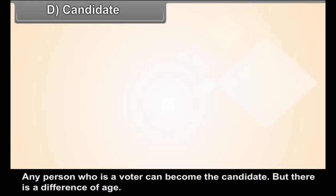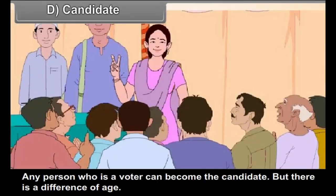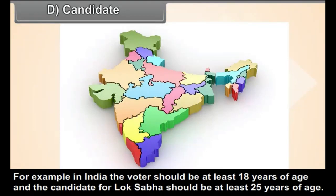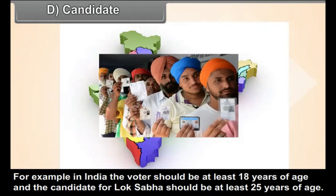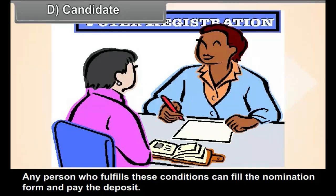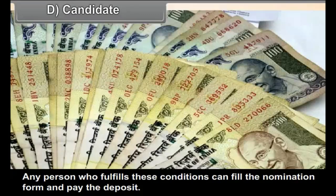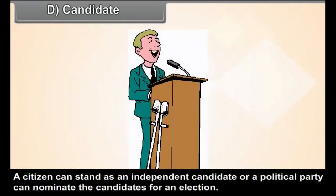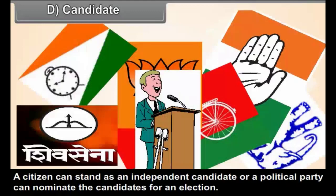Candidate: Any person who is a voter can become a candidate, but there is a difference of age. In India, the voter should be at least 18 years of age and the candidate for Lok Sabha should be at least 25 years of age. There are other conditions for candidature laid down by the laws. Any person who fulfills these conditions can fill the nomination form and pay the deposit. A citizen can stand as an independent candidate or a political party can nominate candidates for an election.